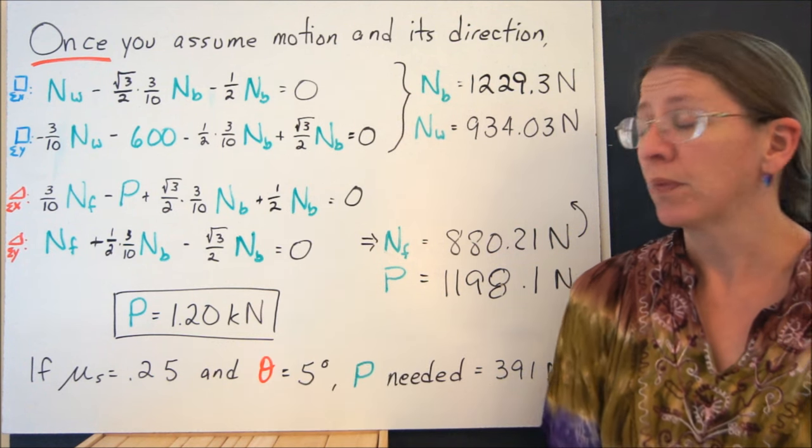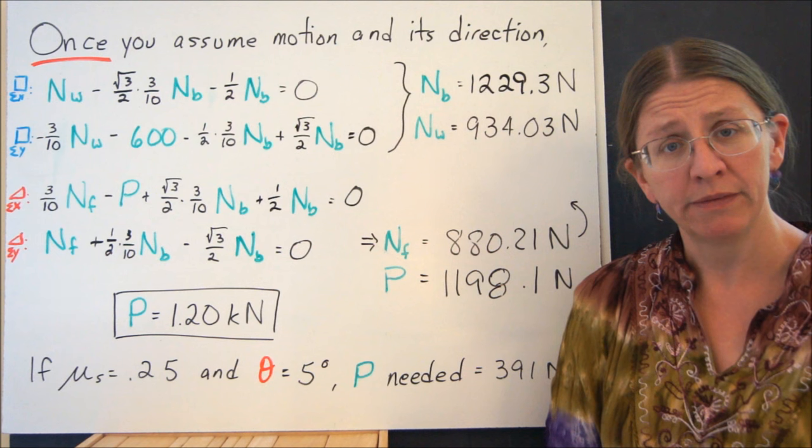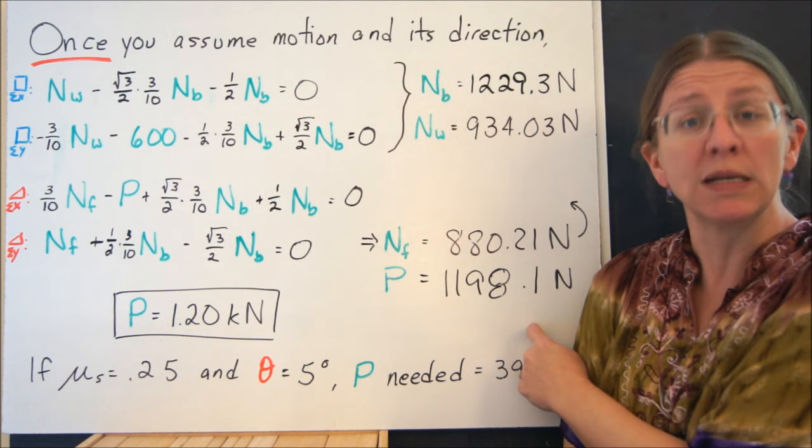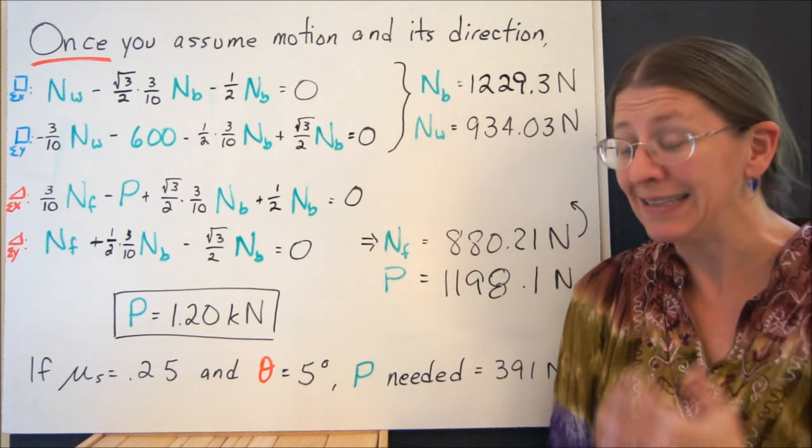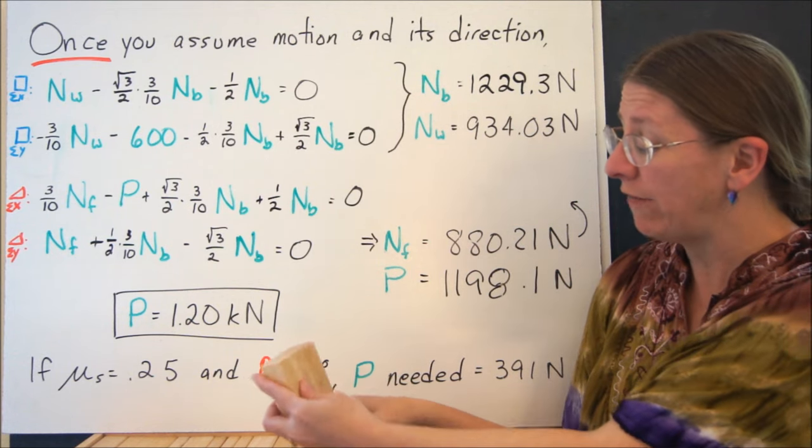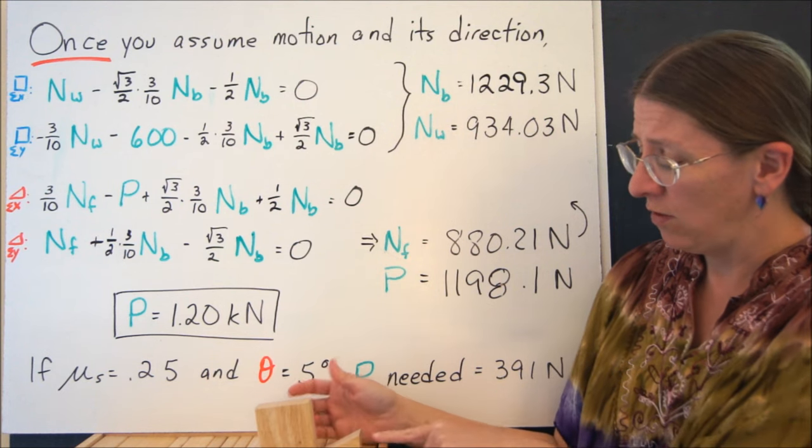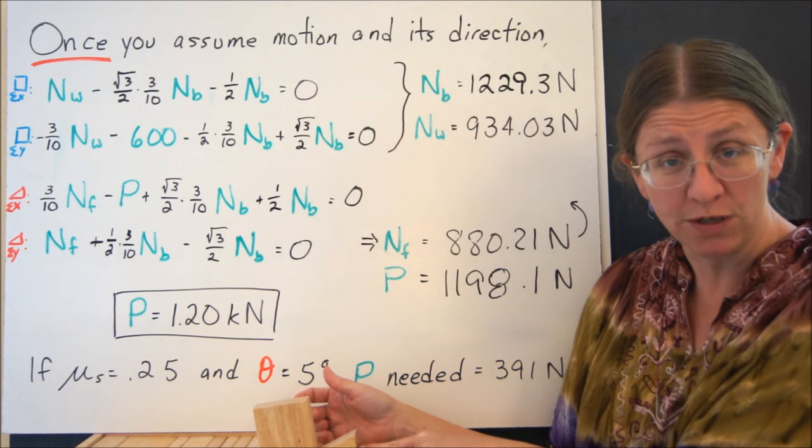Now this number is almost twice what my block weighed. So my block was 600 N, and this is almost twice that. Clearly that is not ideal. I mean the goal here is to lift heavy blocks by means of wedges where I'm going to use less effort, not more.